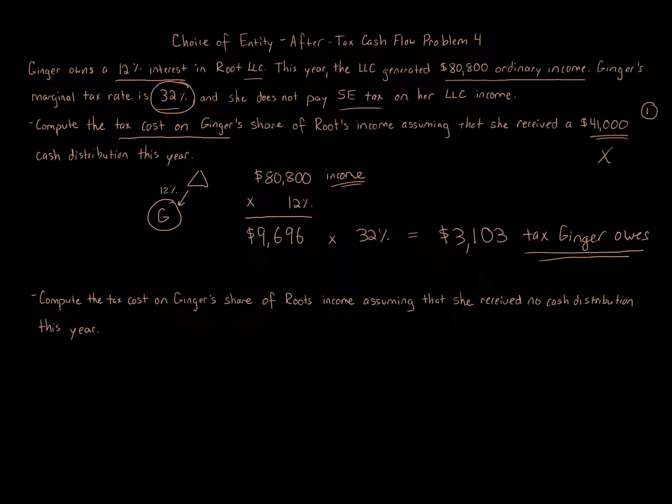That has nothing—we ignore that for purposes of this question. If you were asked different things like what's the consequence of the distribution, there may be gain or there won't be—it depends on what the basis is. But here it's just asking what's the tax cost of the allocated income of Ginger's share, and it's $3,103.